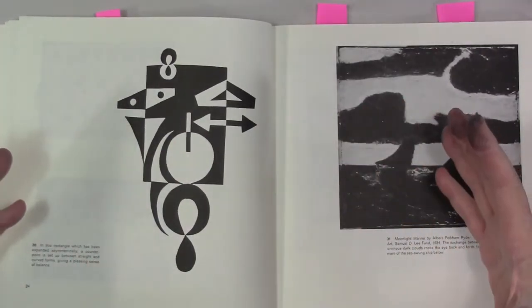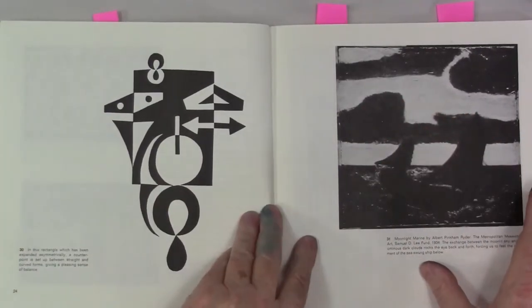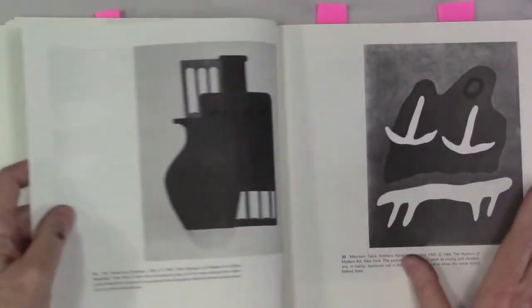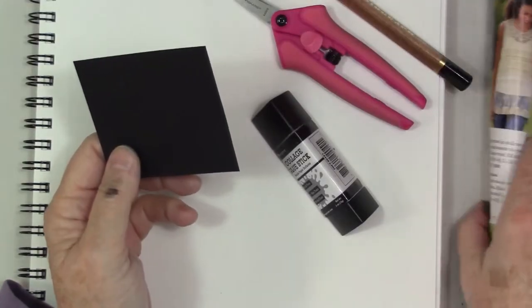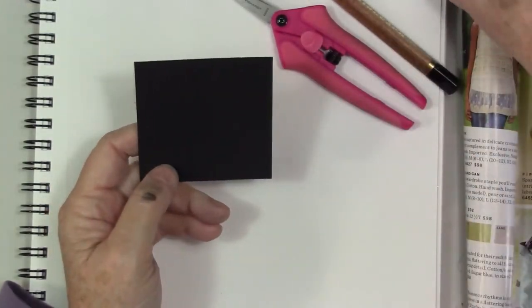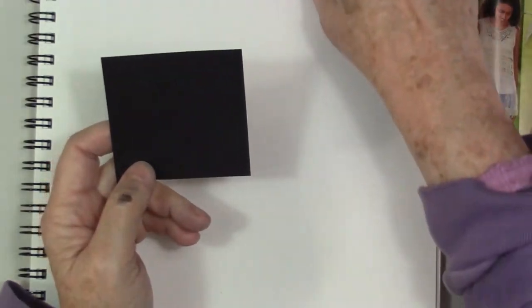This has been expanded. It's called the expanded square or a rectangle. Okay time to get busy.